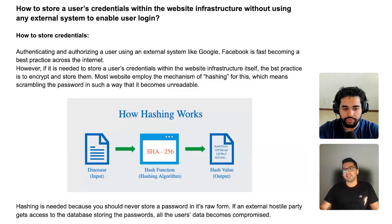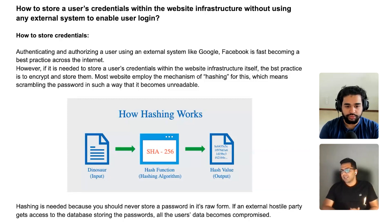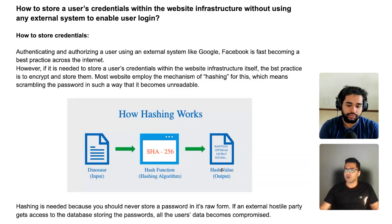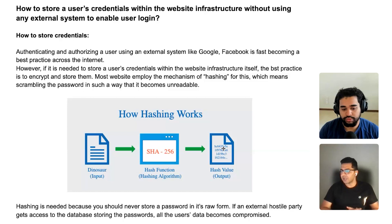Hashing basically means that you scramble the password to a value which is not human readable. Hashing is done with a lot of algorithms like SHA-256, MD5, and several others. For example, if my password is 'dinosaur,' the hash function is going to convert that string into a value that is non-human readable — something like bc64365. That is, of course, not human readable.